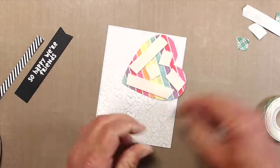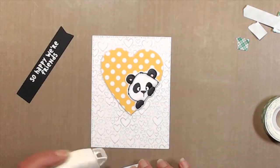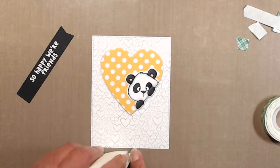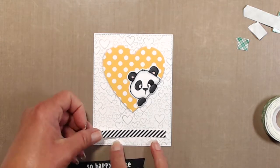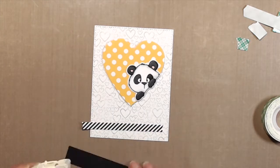I decided to add a second fishtail banner that I had cut from black and white striped paper, which is also from My Favorite Things. Played around with the placement of that, adhered that down. Then added the sentiment fishtail banner and adhered that down.